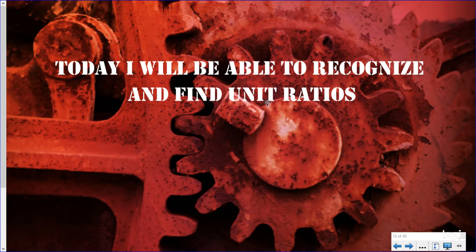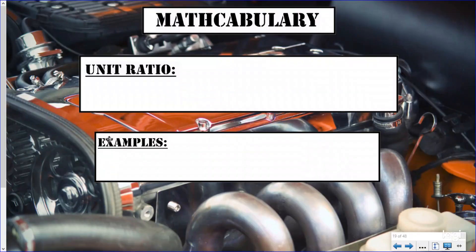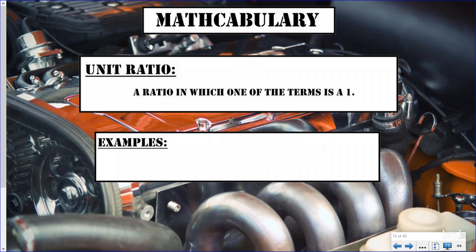Let's figure it out together. The first thing we want to do is go over some math vocabulary so we have it in our brain when talking about these things. A unit ratio is a ratio in which one of the terms is a one. The last couple of lessons we've been learning about ratios, scale factor, and rate. A unit ratio is just a normal ratio but one of the terms is one.